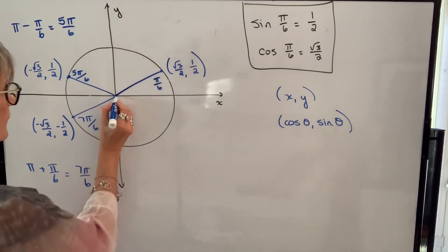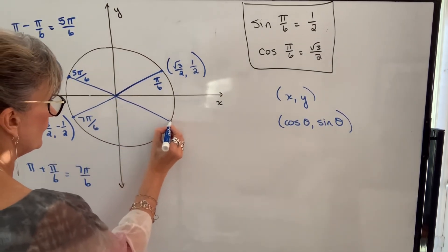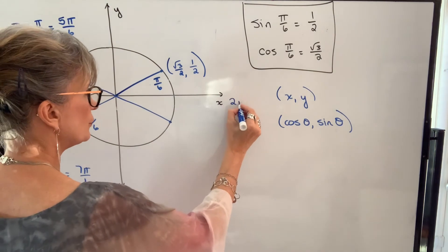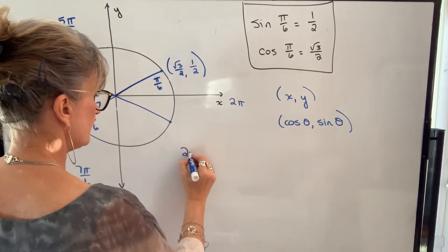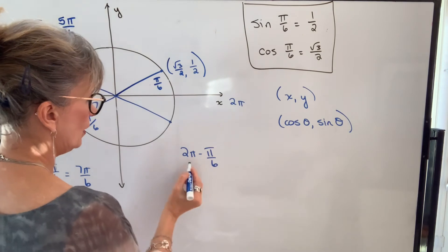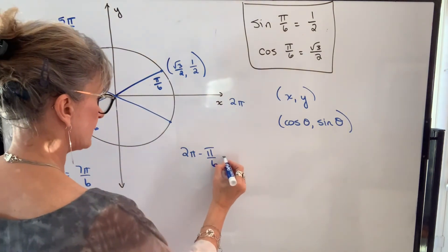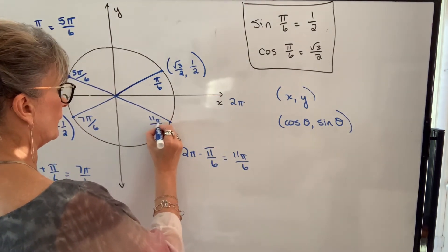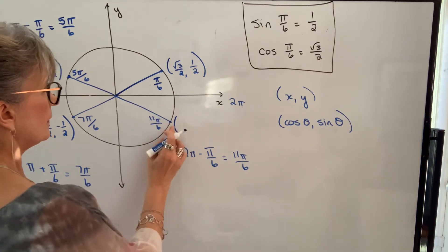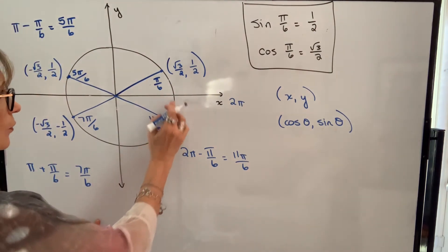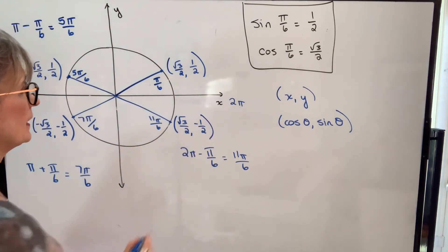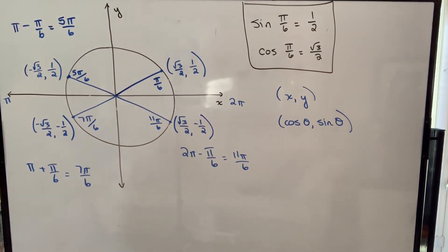In quadrant four, if the rotation from the horizontal is pi over six, we work with two pi minus pi over six, which is twelve pi over six minus one pi over six, giving eleven pi over six. In quadrant four my x coordinate is positive and my y coordinate is negative. So there are all the values for my sine and cosine for those four angles.